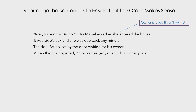The next sentence: 'It was six o'clock and she was due back any minute.' So who is 'she'? This is a mysterious start if this were our first sentence — it doesn't quite make sense in this context because you don't know who she is, and yet there has been a reference to an owner. So perhaps we should be looking for a sentence about an owner, because we know that 'she' is the owner, Mrs Maisel.